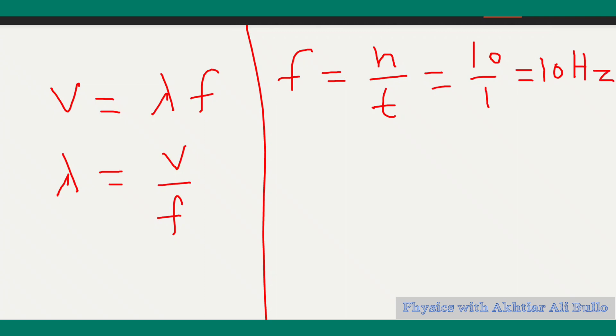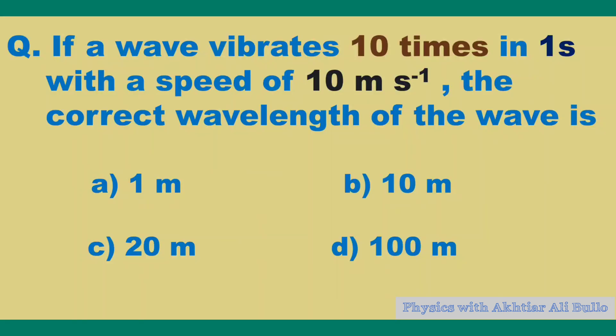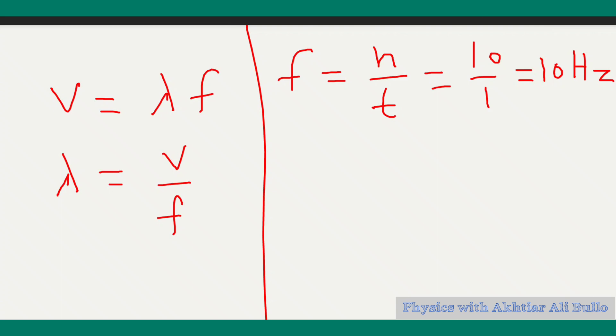Frequency is 10 Hertz and velocity is 10 meters per second. By substituting these values, λ = v/f = 10/10 = 1 meter. So the wavelength is 1 meter.